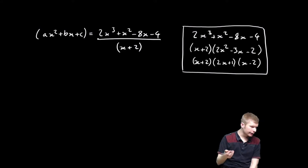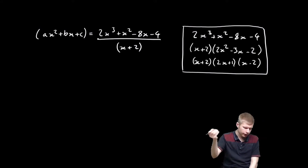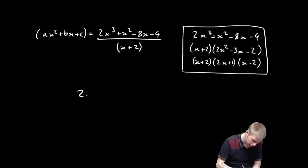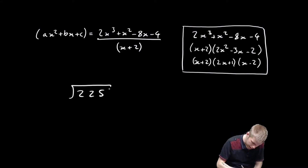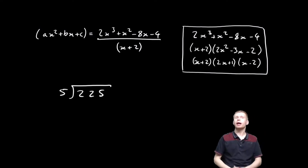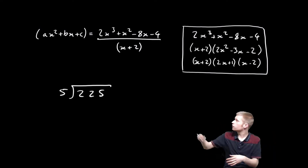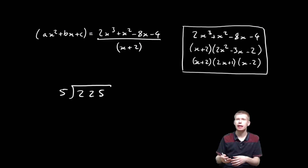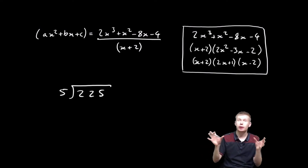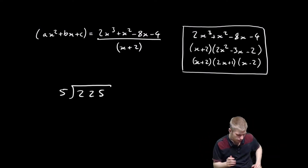Let's take an example. Let's do 225 and divide that by 5. Let's remind ourselves how to do long division, because most of us do it by short division, but we're going to have to do it the long way here.